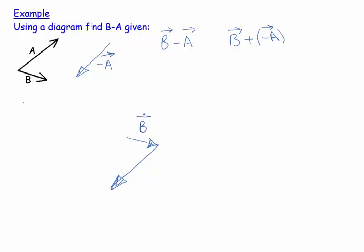I put the tail of the second vector on top of the head of the first vector, and then for my resultant I basically do my dotted line.